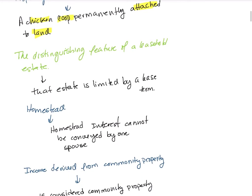A distinguishing feature of a leasehold estate is that the estate is limited by the lease term. Think of it like leasing a car — that car is yours for a period of time. A leasehold estate works the same way: as long as the lease is valid, it's yours.